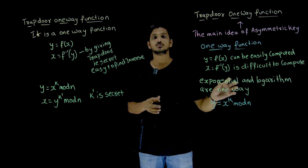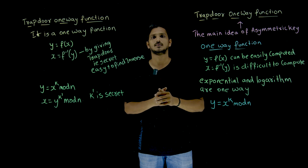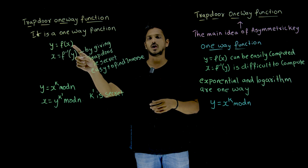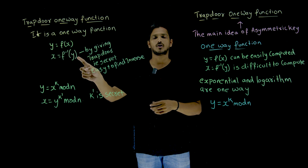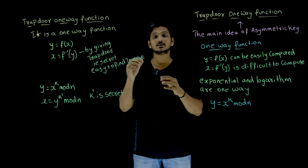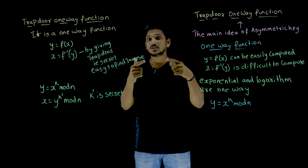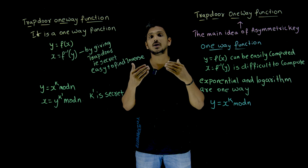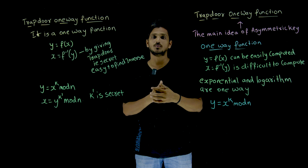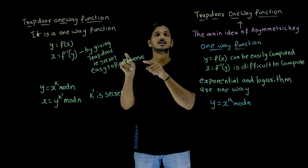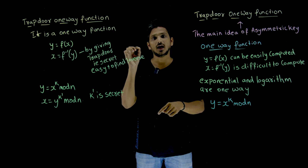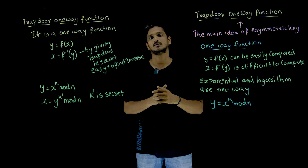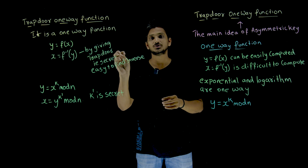So exponentials and logarithms work as a one-way function. Now we need to understand what is meant by a trapdoor one-way function. It is a one-way function — y = f(x), x = f⁻¹(y) — but by providing a trapdoor, meaning a secret, we can easily find the inverse as well, i.e., compute f⁻¹(y) in polynomial time if that secret is given. This secret we call the private key in asymmetric key cryptography. In our last class we discussed private key and public key — this private key is not going to be shared outside.